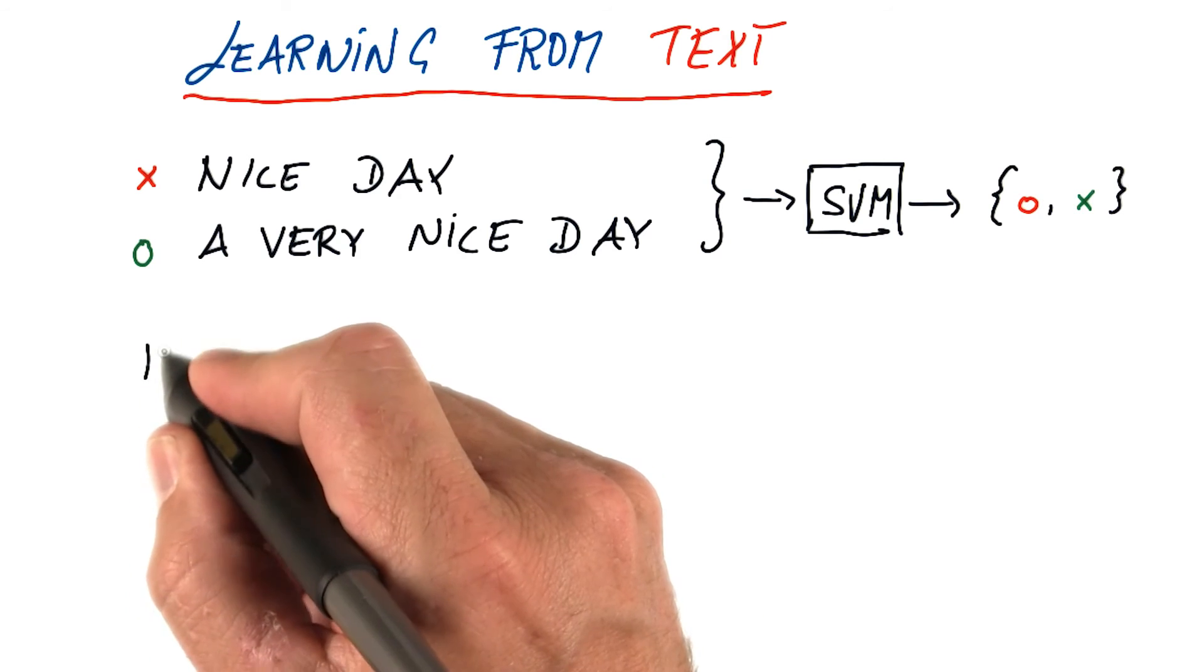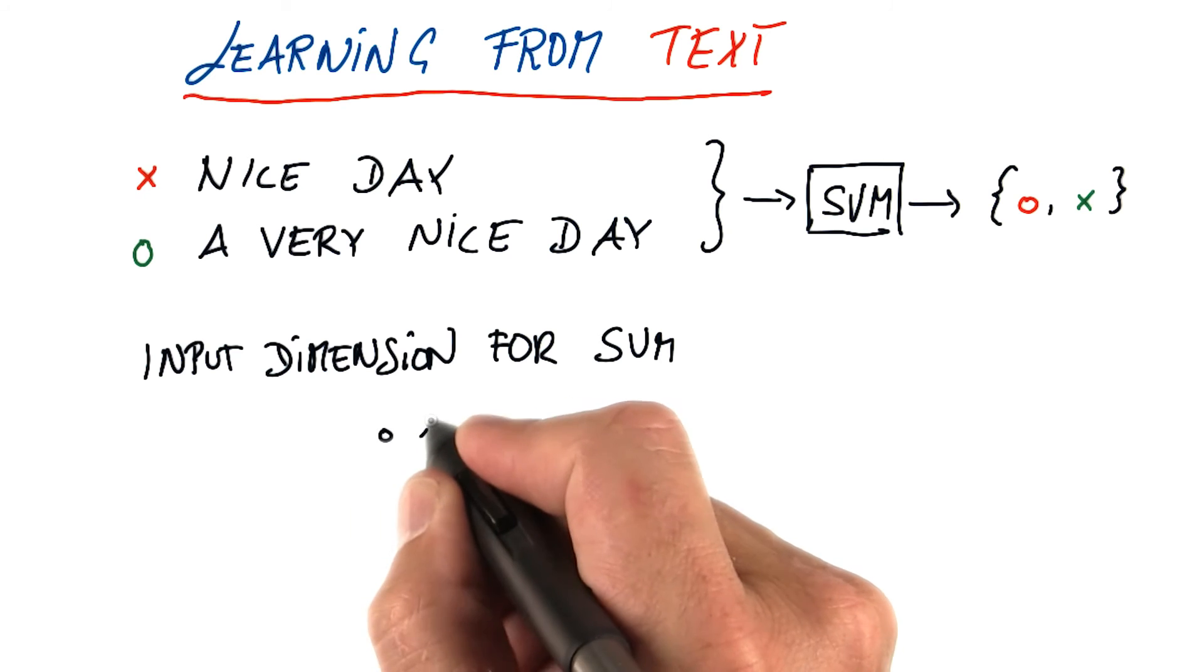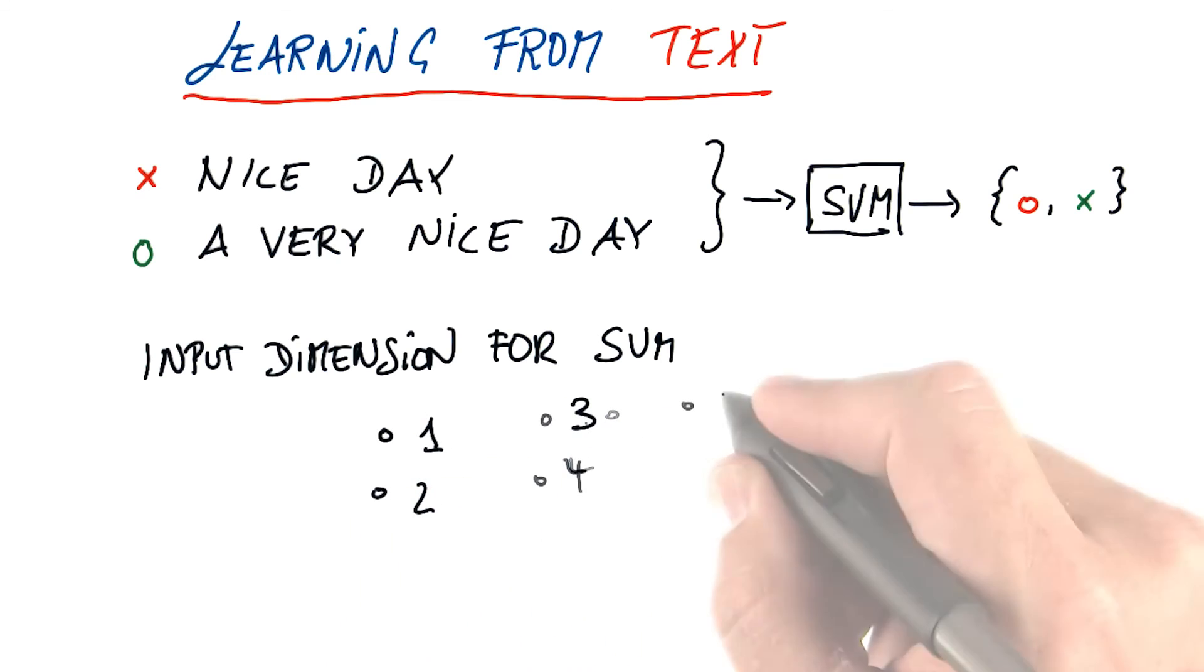What do you think is the best input dimension for the support vector machine? Give you a few choices. One, two, three, four, or hard to tell. Give it the best shot.